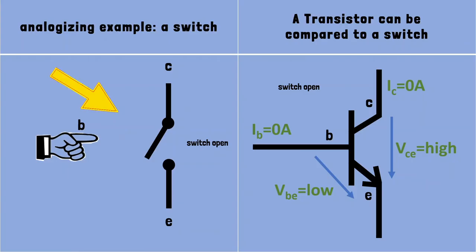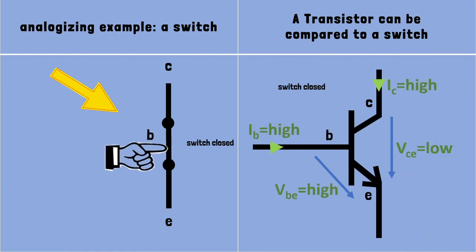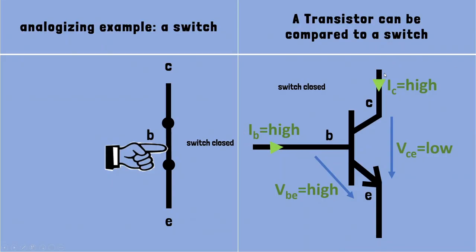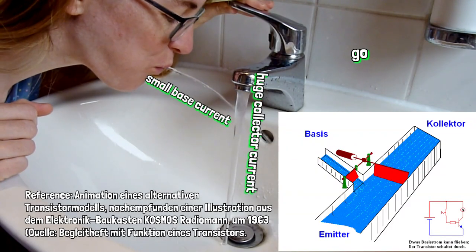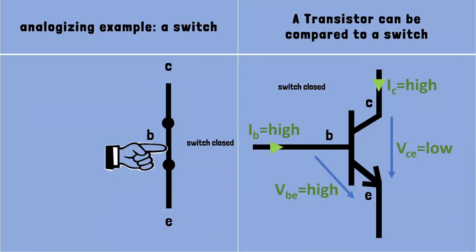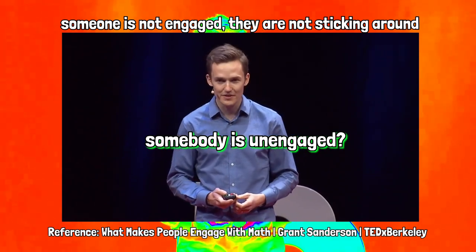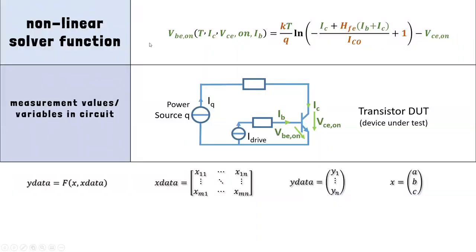Pay attention to this animation on the left where the switch is operated. We turn on. Now we have a small base control current and can drive a much higher collector current through the transistor. Understood the principle? At the top, our solver function approach with semiconductor physical background. Our variables are colored in green and we also see them in our circuit diagram in the middle. In terms of hardware, it's very easy to measure voltage values.